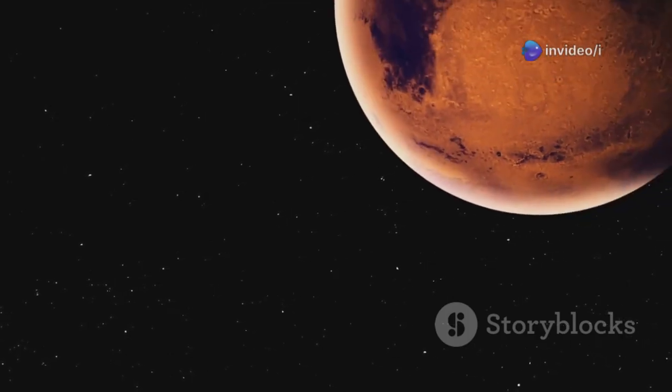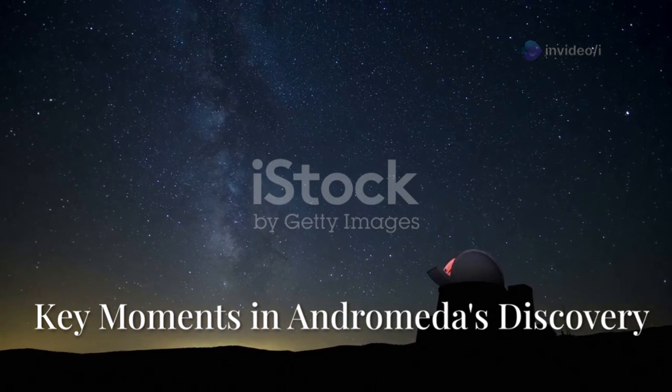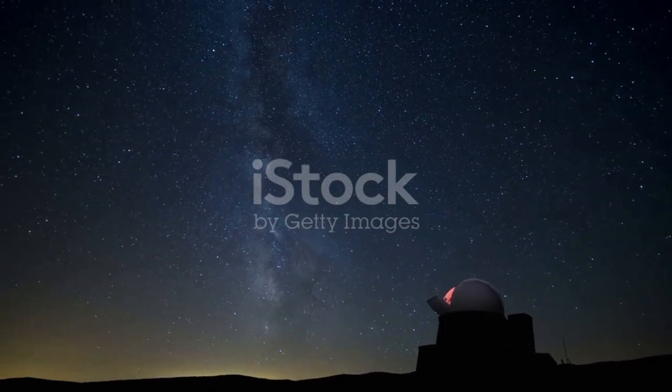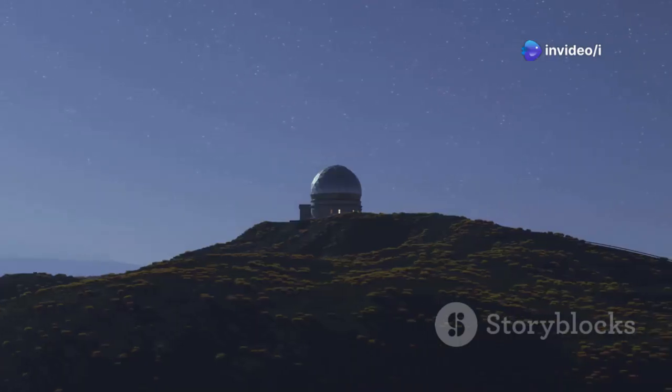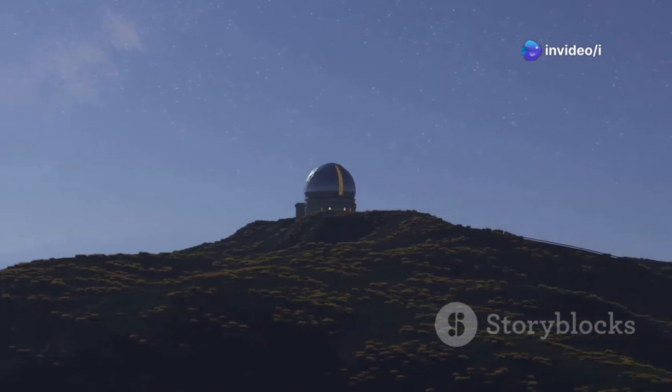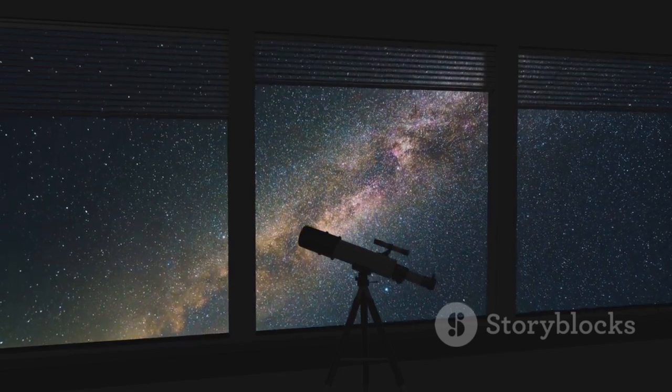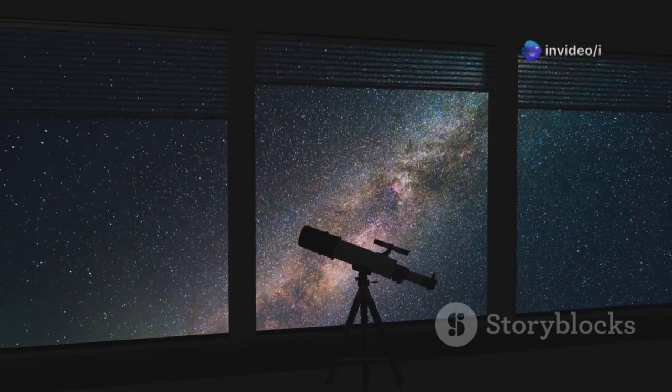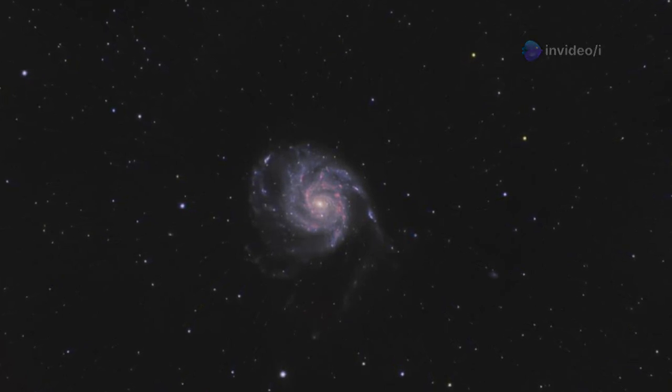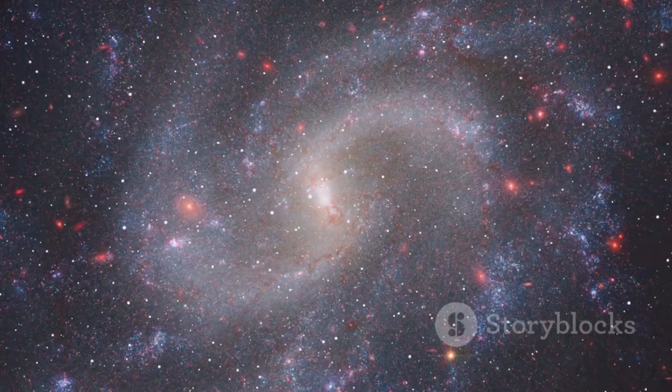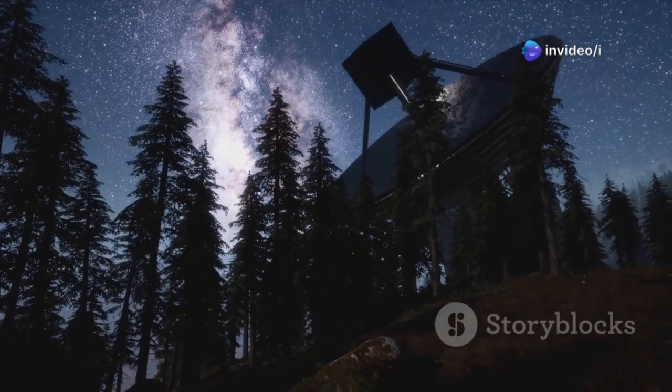Unveiling the island universe: key moments in Andromeda's discovery. Our understanding of Andromeda wasn't built overnight. It's the result of centuries of observation and groundbreaking discoveries. For a long time, objects like Andromeda were simply known as spiral nebulae, and their true nature was a subject of intense debate. The first detailed photograph of Andromeda, taken by Isaac Roberts in 1888 using a 20-inch reflector telescope, was a pivotal moment. It revealed its spiral structure with unprecedented clarity, fueling further curiosity.